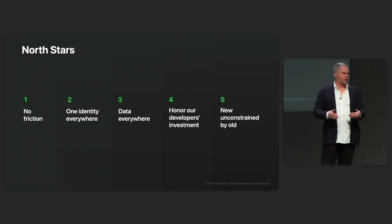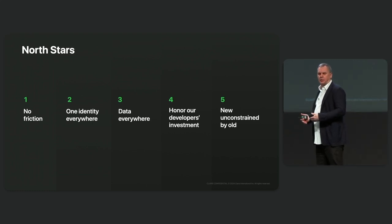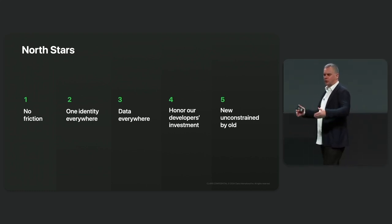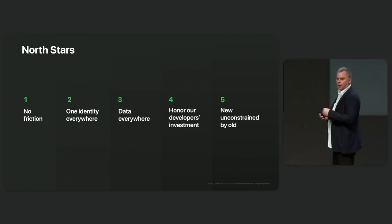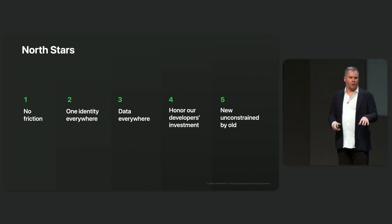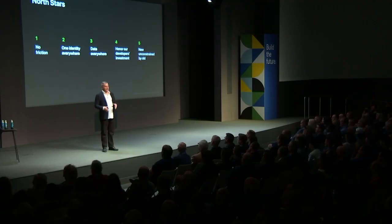The first is no friction to success — we want to see new developers getting to success and building their first solution without impediments. The second is providing one identity everywhere, making sure that you are you anywhere you go in our ecosystem. The third is data everywhere, making sure that data available in one part of the platform is available everywhere in the platform. Then there are two that seem a little in conflict but provide a good balance: the fourth is honoring all of your investment in the platform and in Claris, and the fifth is making sure that new technologies and capabilities we design are unconstrained by decisions we've made in the past.